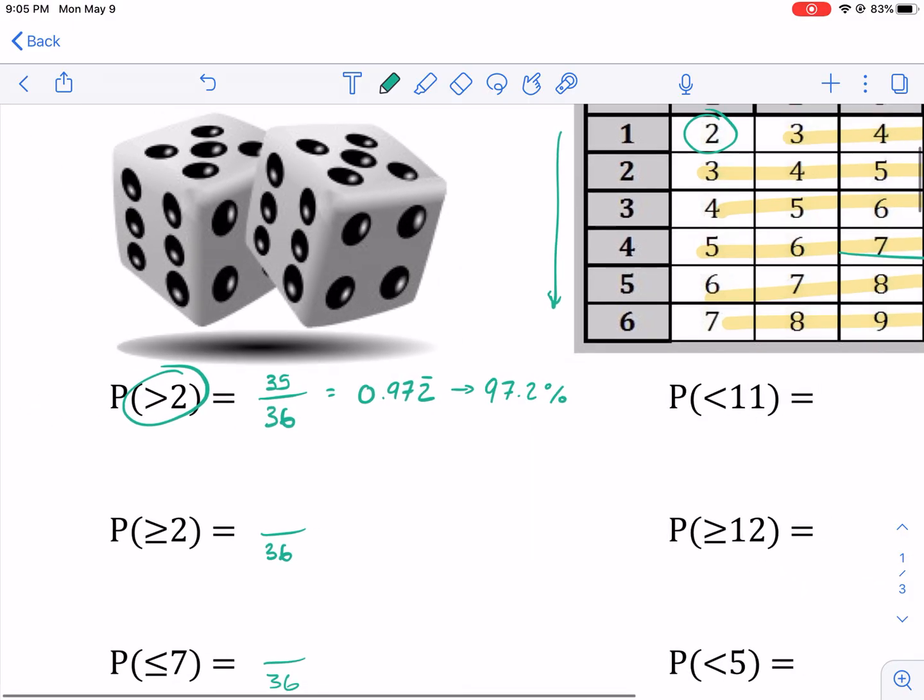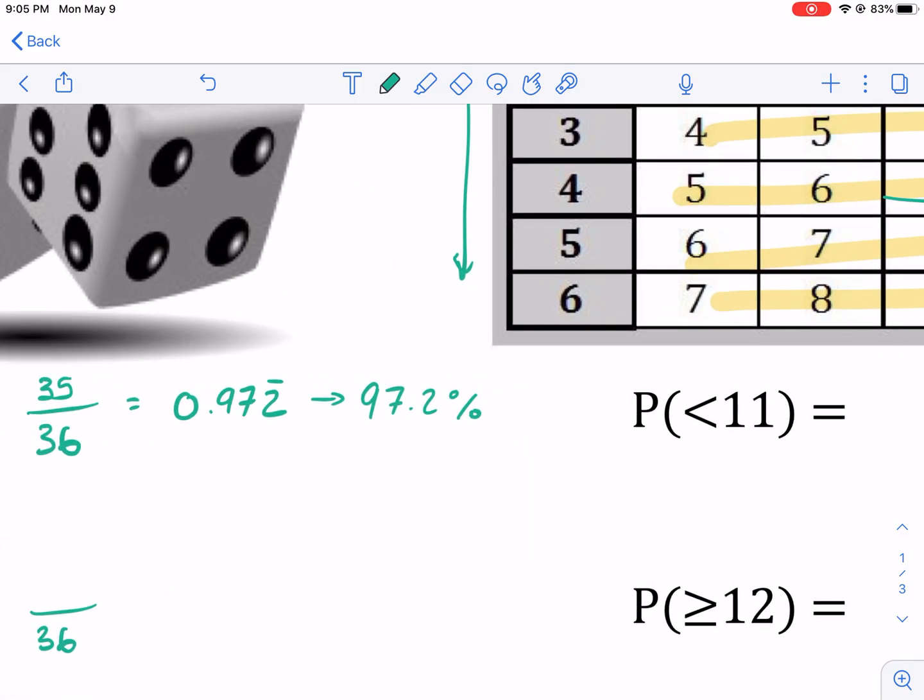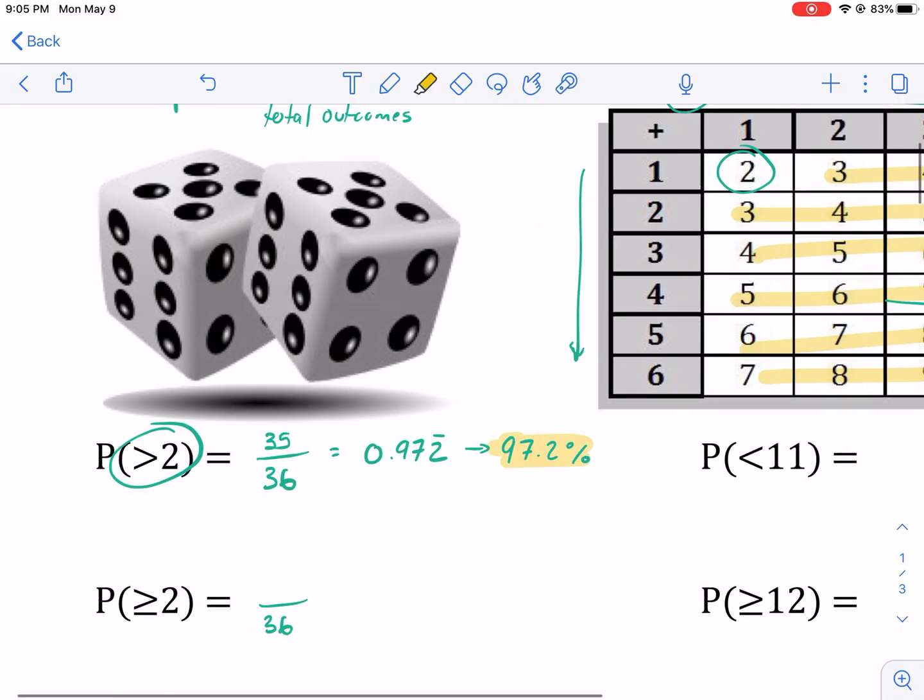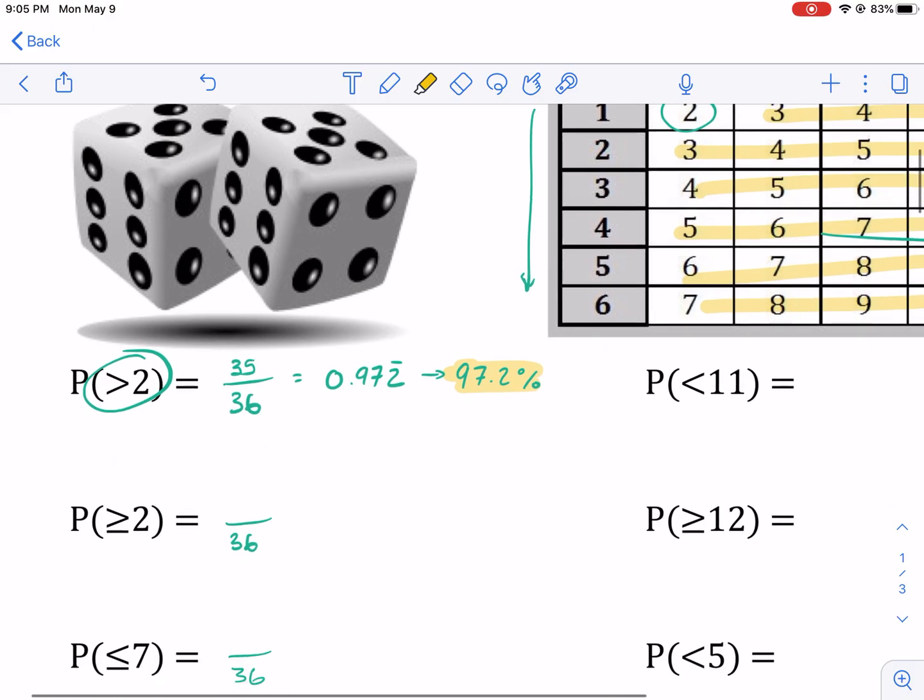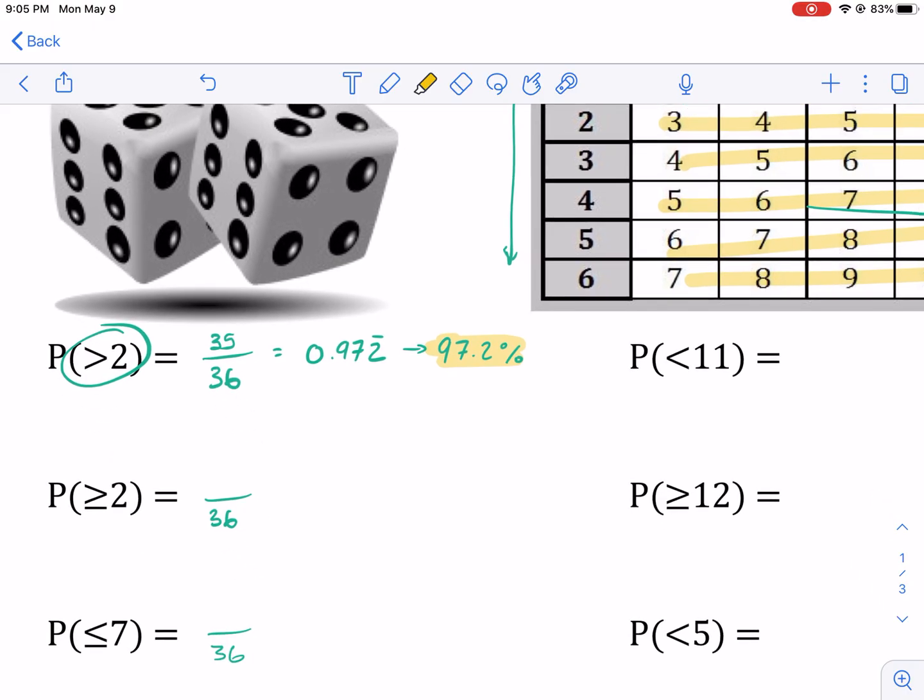So if you're playing a game or you're doing a chance game or you're at the county fair or whatever, and you want to know the probability of rolling a two, sorry, a three or bigger on that dice, you have a 97% chance of that happening. Now, of course, there's always a chance you do roll that two, but it's not very likely. It's less than 3%.